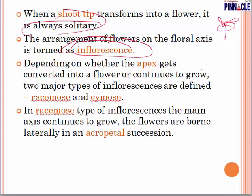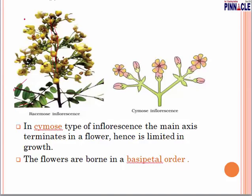Let us see one diagram so that we can understand this terminology in a better way. This is acropetal order and this is basipetal order. This is the difference between cymose inflorescence — here the flower is at the top — and racemose inflorescence, where you will find flowers in acropetal succession; the plant will grow and the lateral parts grow later, while the top grows in acropetal order.